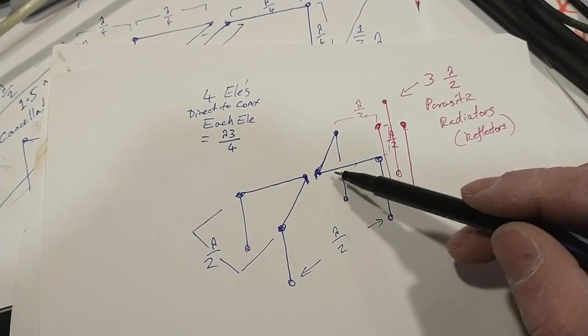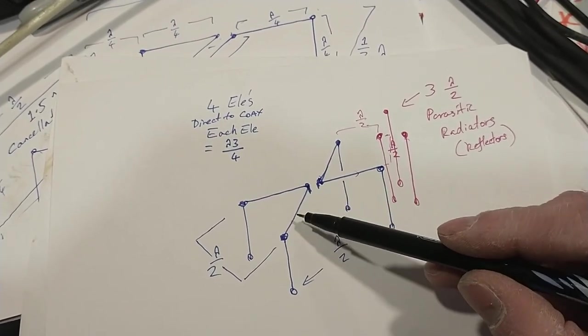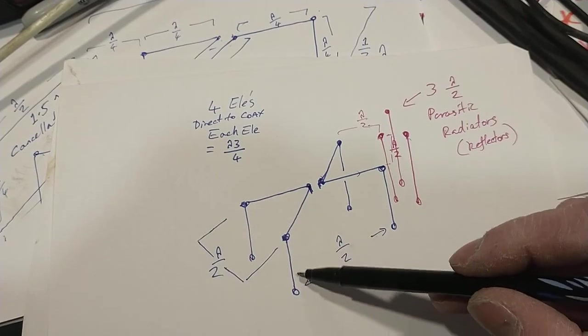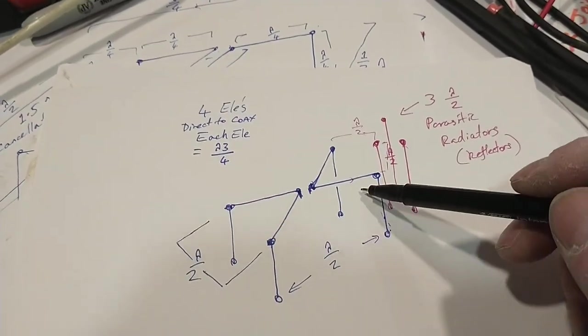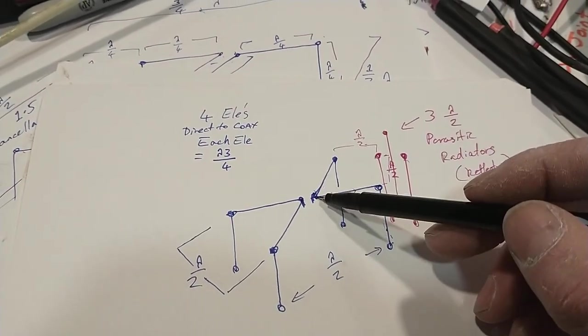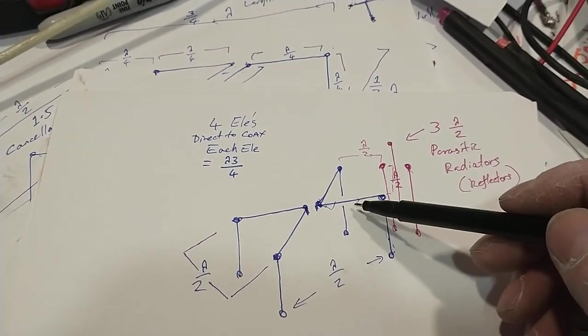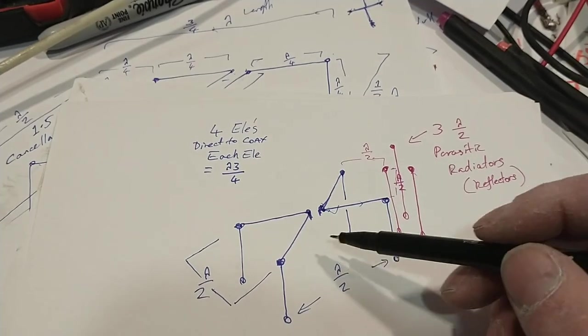If it was just one wire going either way, that would be like a center-fed dipole, except the difference is this one turns down 90 degrees and this one turns down 90 degrees, and there's two instead of one per side.